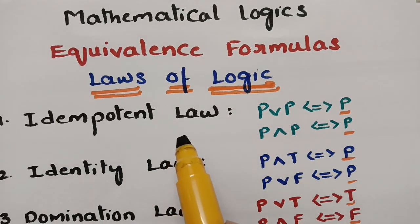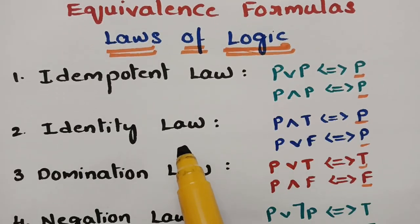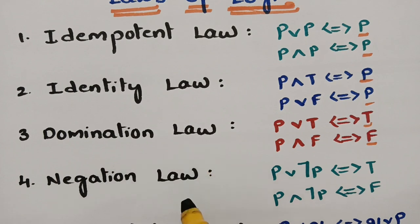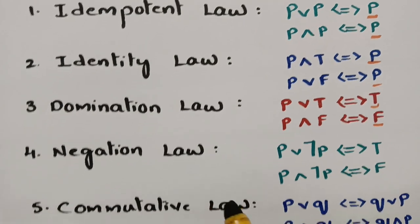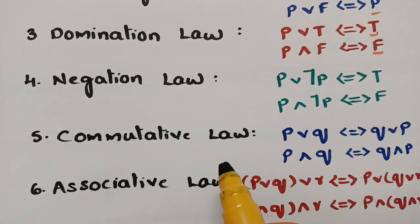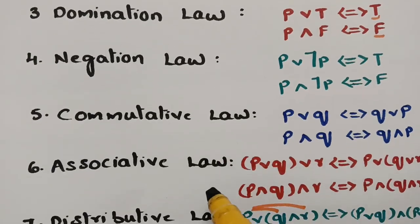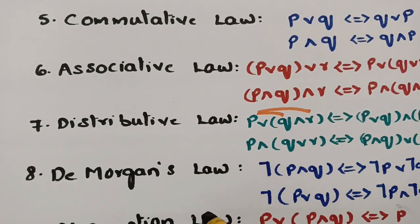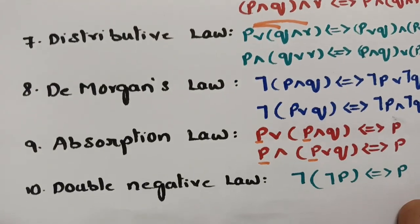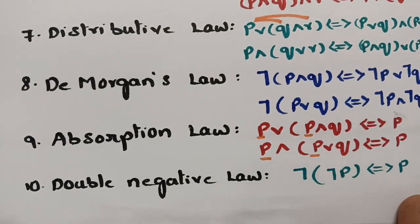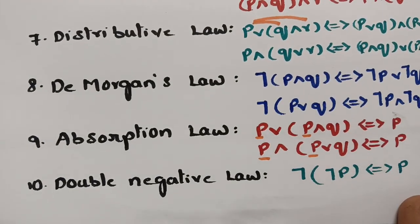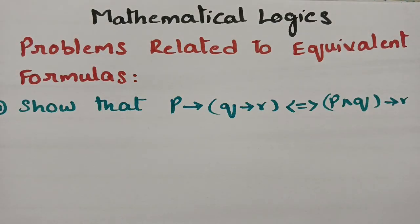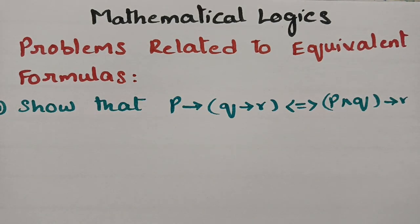The 10 equivalent formulas are: idempotent law, identity law, domination law, negation law, commutative law, associative law, distributive law, De Morgan's law, absorption law, and double negation law. These are the formulas I am going to use to solve problems without using truth value tables.